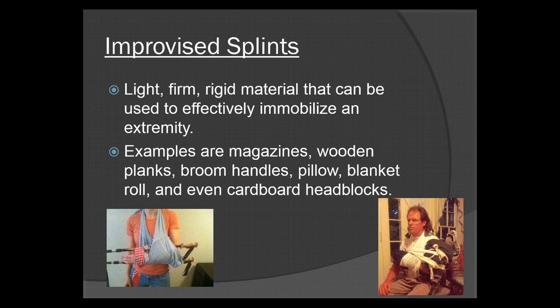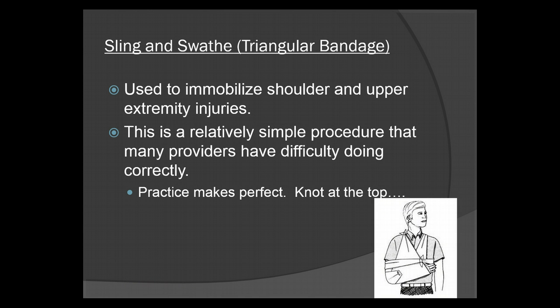Improvised splints are going to be light, firm, rigid material that can be used to effectively immobilize the extremity. Examples are magazines, wooden planks, broom handles, pillows, blankets, blanket rolls — even cardboard head blocks can be improvised to make a splint. As you can see here, it looks like she used a shirt for a sling and ski poles for rigidity against the arm. The sling and swath use the triangular bandage, and this is used to immobilize the shoulder and upper extremity injuries. It's a relatively simple procedure that many providers have difficulty doing correctly — practice makes perfect. Make sure the knot is at the top, as you see here.